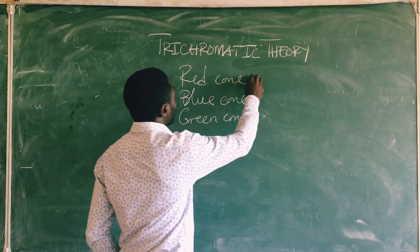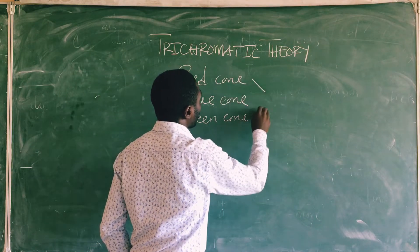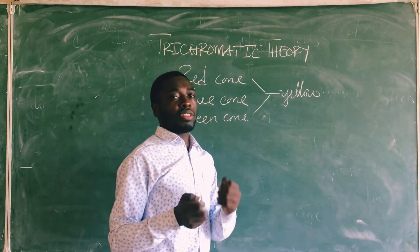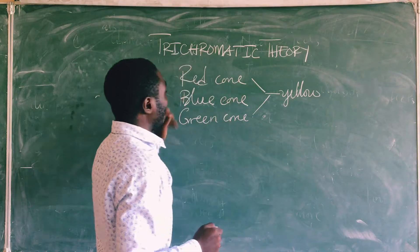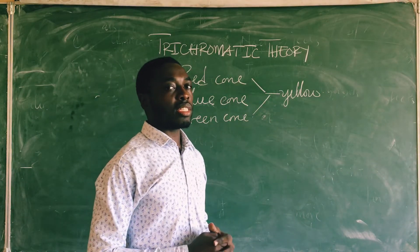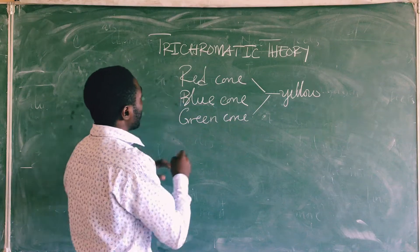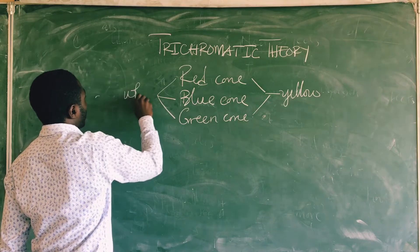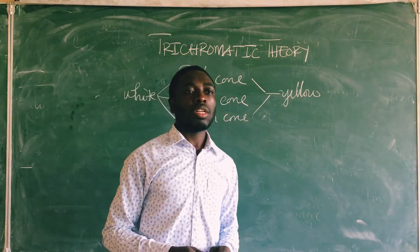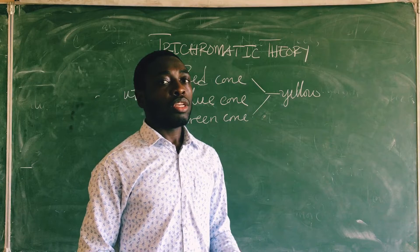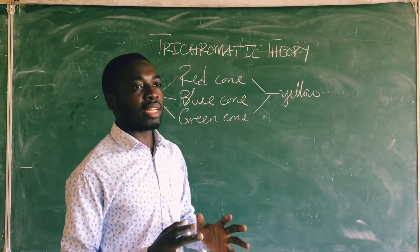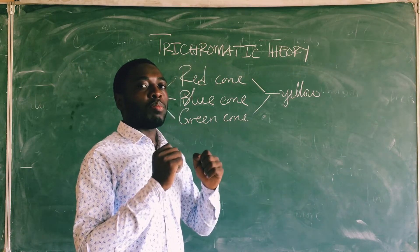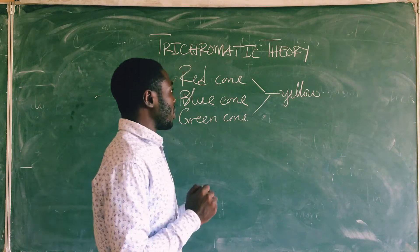So if I stimulate the red cone and the green cone, I am going to see yellow. For you to perceive the yellow colour, it is because the red cone and the green cone are being stimulated. Now if all the cones are being stimulated by light I am going to have the white colour, and if none of them is being stimulated at all we are going to see black. The Trichromatic Theory states that colours perceived by an individual are produced by three different types of cones.